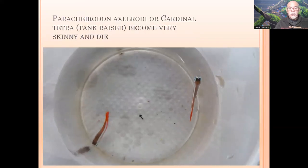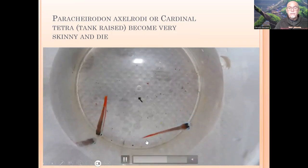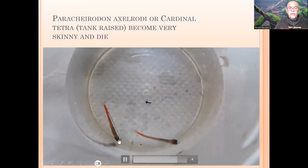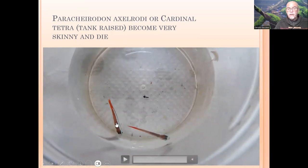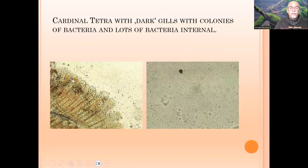Here we see the Cardinal Tetra which we took out of the aquarium. Some are very skinny, and those are dying. This one is starting to get skinny — in the coming days he will also be looking like this one here. And that's the one we take out to do an examination. We could find here in the gills the black accumulation parts covering the lamellae, causing bad functioning of the gills.